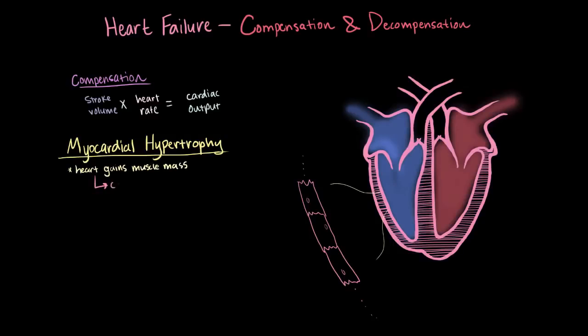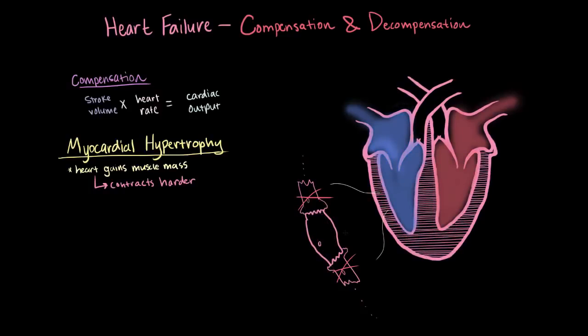And when it gains muscle, it contracts harder, because it's stronger. So to try to make up for this decrease in stroke volume, or this death of cardiomyocytes, or heart muscle cells, these surviving cardiomyocytes become elongated, and they grow. And this causes the heart muscle as a whole to get larger. So you get this enlarged heart muscle.